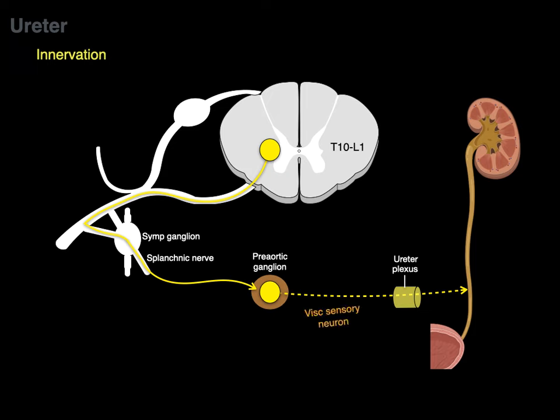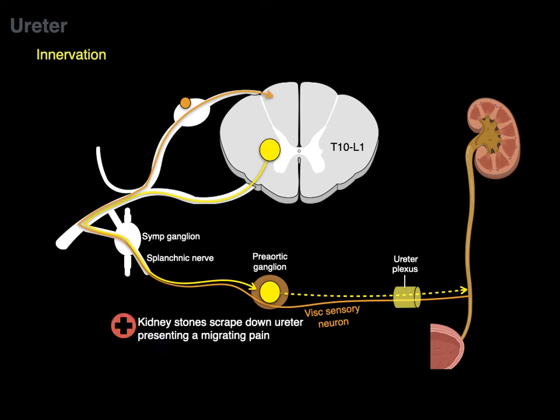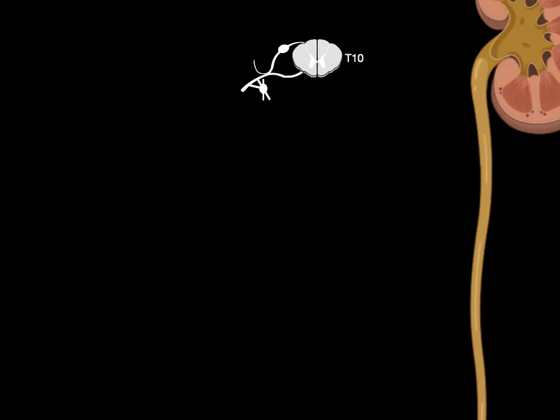There are also visceral sensory neurons that travel from the ureter back along the same pathways through the dorsal root to the spinal cord, carrying information about stretch and damage. These are visceral sensory, which means they are not pain directly. That's what makes kidney stones so interesting — as they scrape down the ureter, they present with a migrating pain that is a type of referred pain.